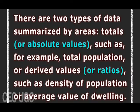What data can be displayed using the choropleth technique? There are two types of data summarized by areas: totals that are absolute values, such as total population, or derived values and ratios such as density of population or average value of a dwelling. There is a general rule stating that unless areas have similar sizes, absolute values should not be used for choropleth mapping. If absolute values are used for mapping areas that vary in size, misleading maps can be produced.